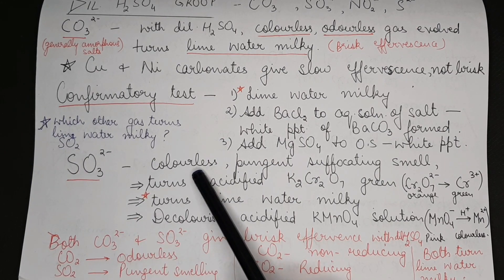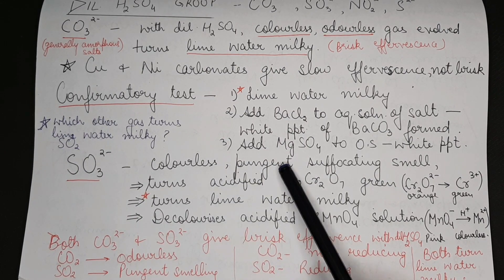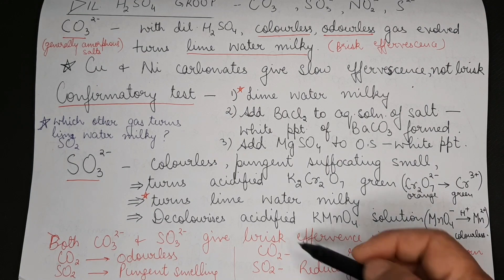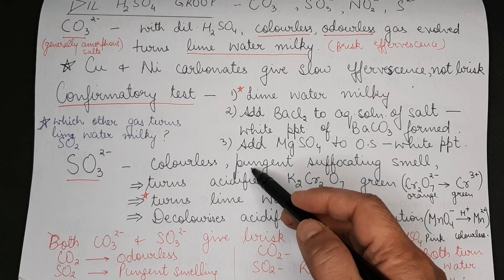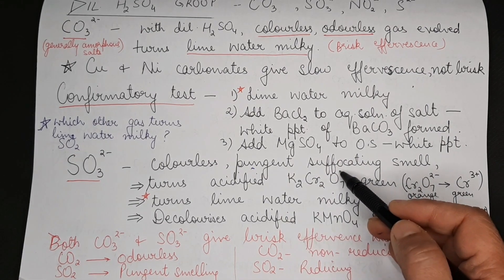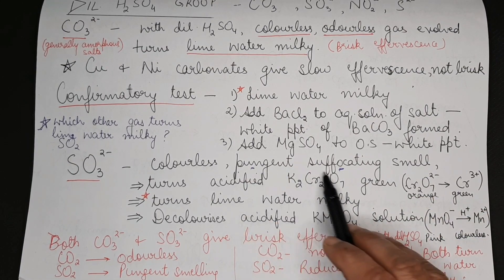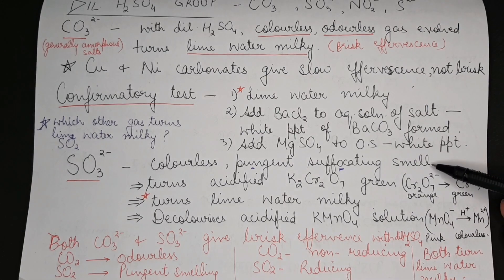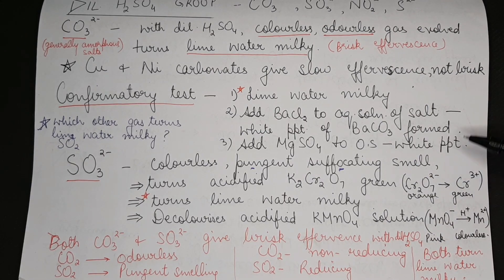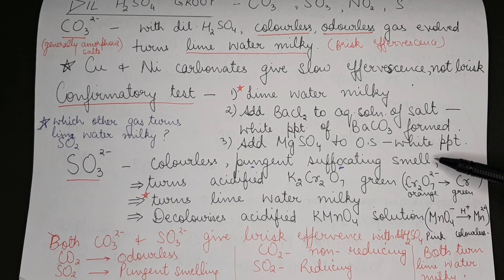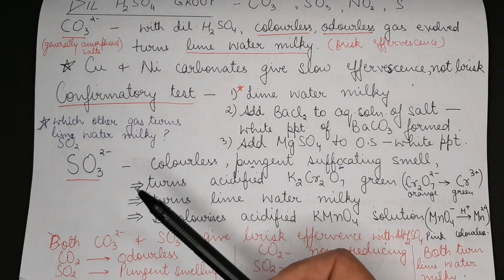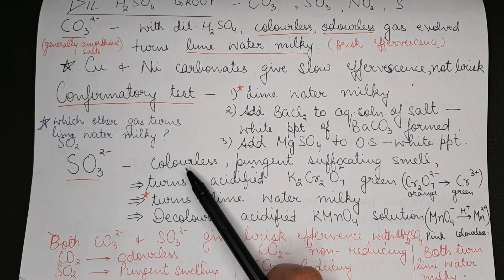How do we test sulfite? Sulfite with dilute sulfuric acid gives a colorless, pungent, suffocating smell. The point that you need to note is carbon dioxide was a colorless, odorless gas, whereas sulfur dioxide is a pungent, suffocating smell. Here you will be able to distinguish between where carbon dioxide is liberated or sulfur dioxide is liberated. Most often in your labs you do carbonate sulfite salts. Sulfite salts are less commonly done.